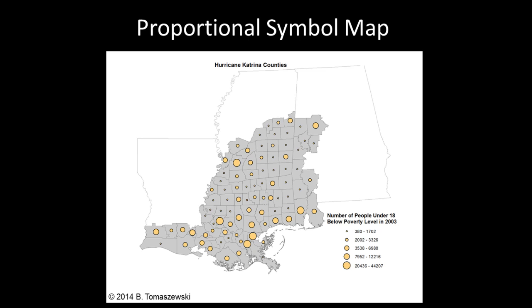Another type of thematic map is a proportional symbol map. Proportional symbol maps use symbols of varying sizes that are proportional to the value or magnitude being shown. This example shows the number of people age 18 living below the poverty level as of 2003 from counties in the Gulf Coast region of the United States eligible for federal disaster assistance after Hurricane Katrina in 2005. A proportional symbol map like this can be useful for comparing differences between counties for disaster vulnerability reduction.